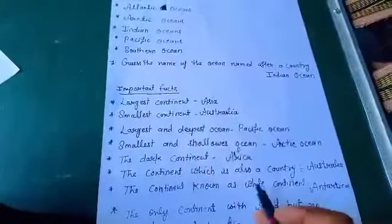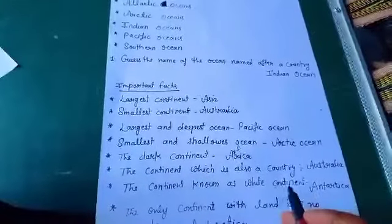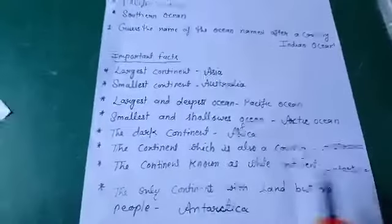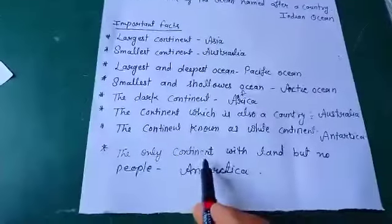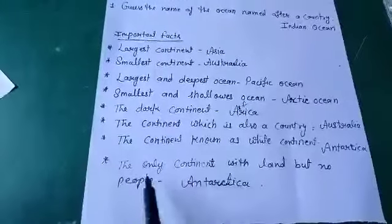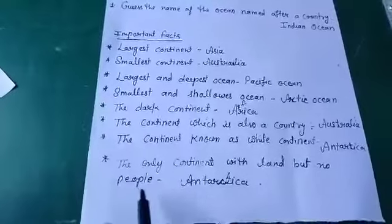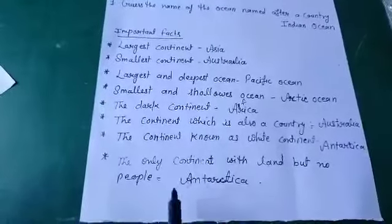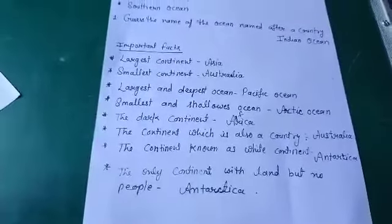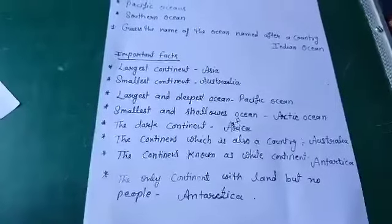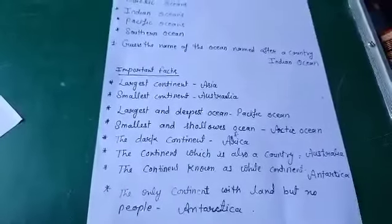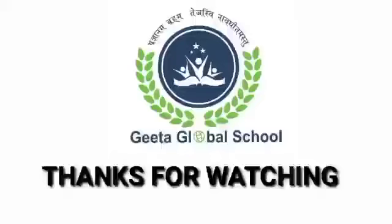Why is it known as the White Continent? Because there is only snow there, so we call it Antarctica. Next — the only continent which has land but no people: this is the continent where no people live, and this is called Antarctica. Antarctica is a place where no one lives. So I'll stop here and I hope you have understood this chapter very well. We will meet in the next video with a new chapter. Thank you so much. Have a nice day. Thank you.